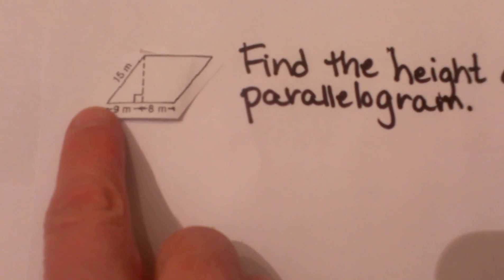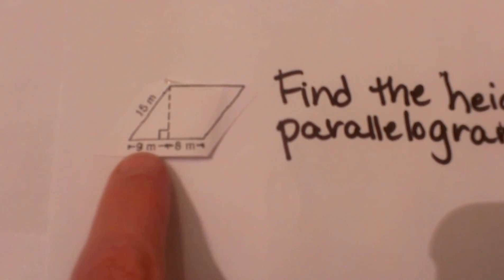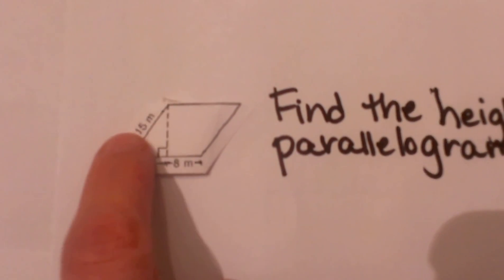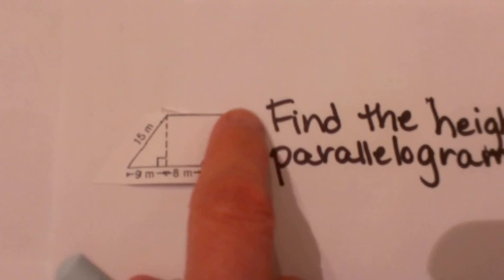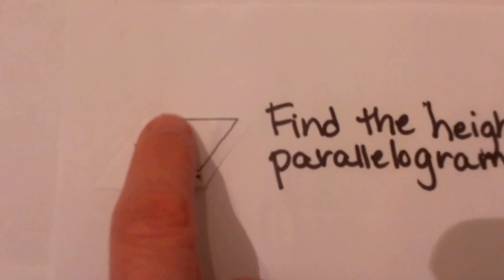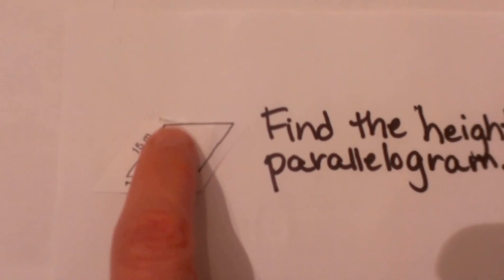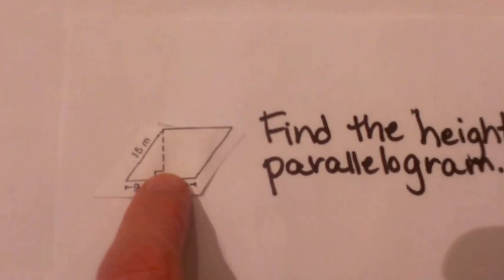We have a base that measures 17 but is split into two parts, 9 on this side and 8 on this side. And then we have a slanted side that is 15. We have an altitude already drawn in. So what we need to do now is figure out what that altitude is so we can find the height.